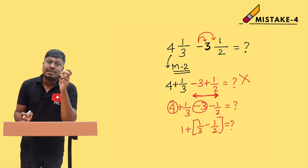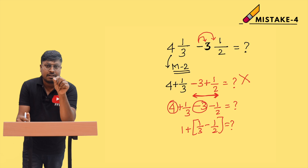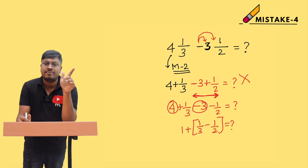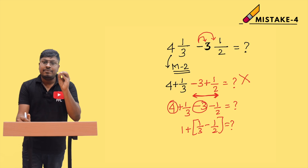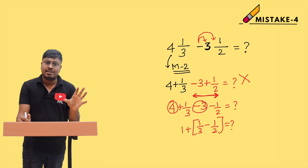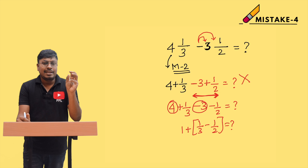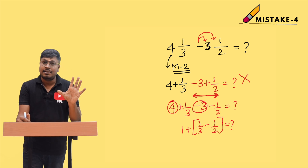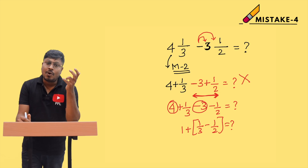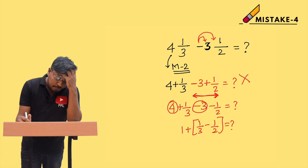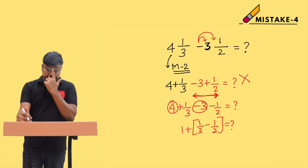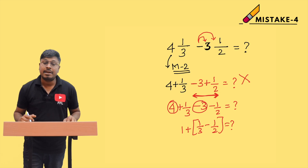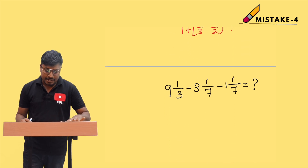In method number 1, we directly convert the mixed fraction into an improper fraction and take the LCM. That approach is only helpful for questions with small numbers — like single digits such as 9, 7, or 6. For two-digit or three-digit numbers, do not use method 1. Use method 2 instead.